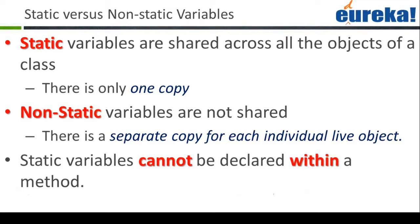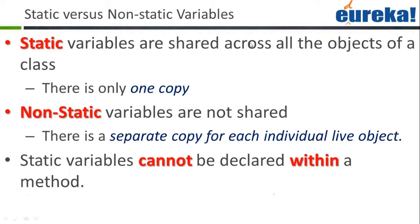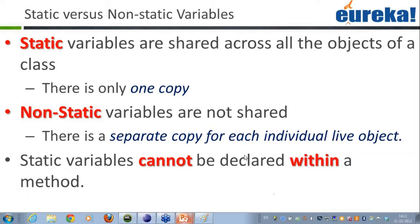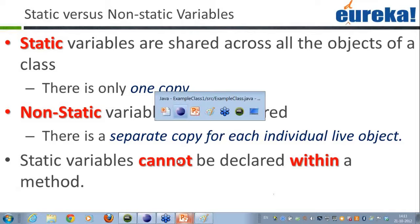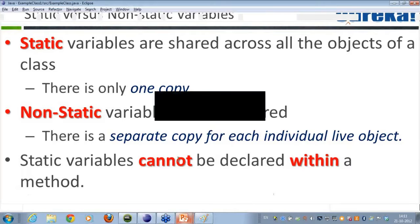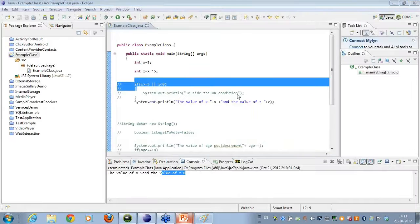Now let's talk about the static context. Static variables are the ones that can be shared across all the objects of a class, but remember there is only one copy of the variable available to anyone. Non-static variables are not shared — they have a separate copy for each individual live object. This is the difference between a static and a non-static variable. Static variables cannot be declared within a method.